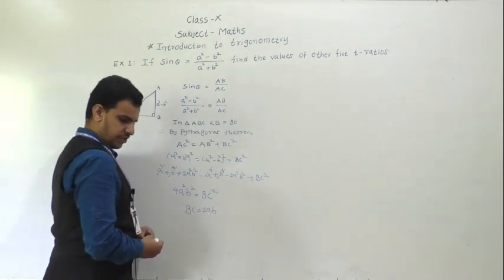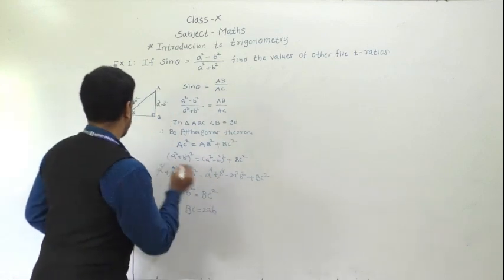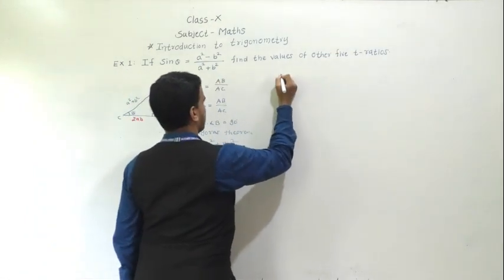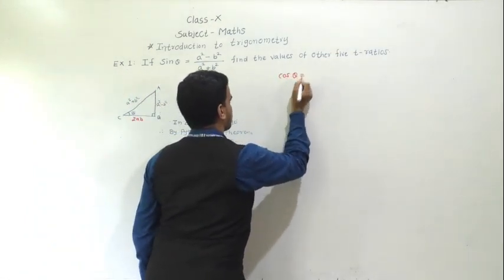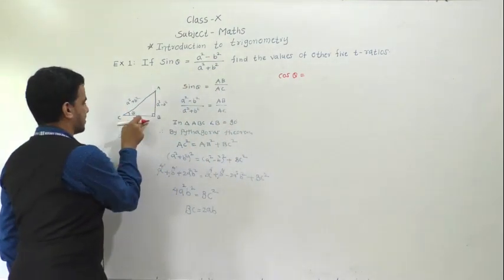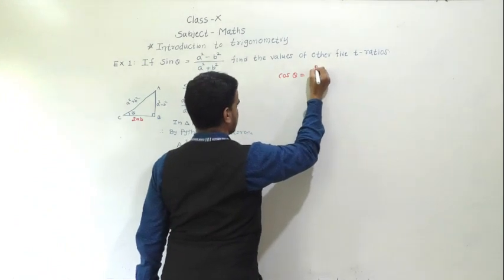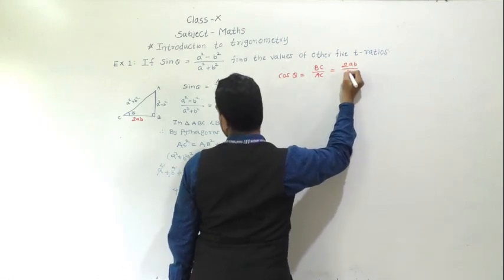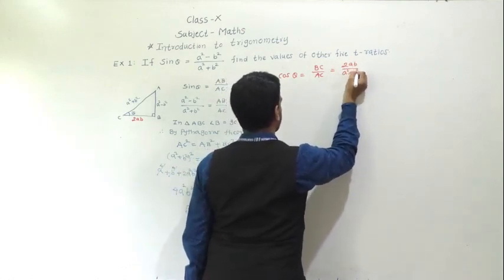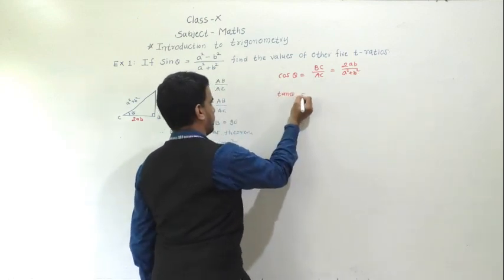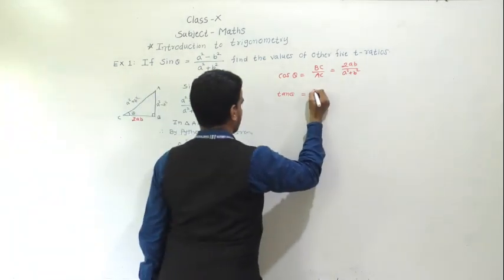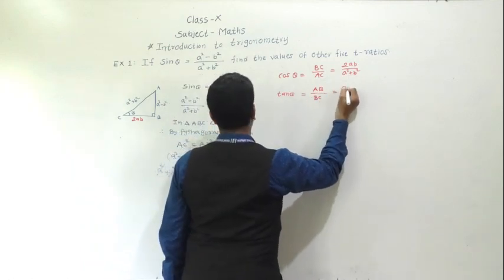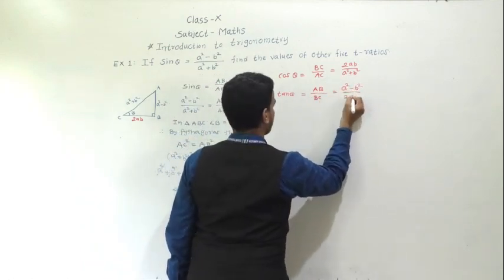Now find cos θ. cos θ equals adjacent side upon hypotenuse, that is BC upon AC, so BC is 2ab upon AC which is a² + b². For tan θ, that is opposite side by adjacent side, so (a² - b²) / 2ab.